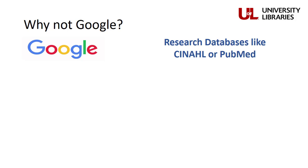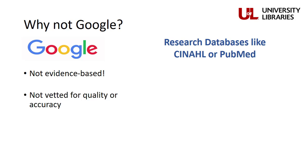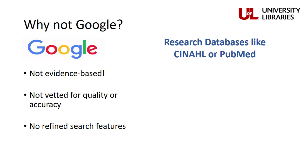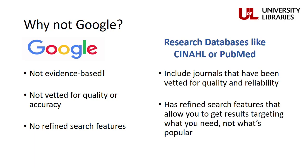You may be asking yourself, why bother with databases at all? Why not just search Google? Google is not an evidence-based resource. Nothing in Google has been vetted for quality or accuracy. A completely fake paper formatted to look professional would still show up on Google, because anything can be posted on the internet without requiring it to be factual. Google also has no refined search features, and results are returned based on popularity as much as relevancy. In research databases like CINAHL and PubMed, however, all journals have been vetted for accuracy and reliability, and they have refined search features that allow you to build searches returning articles on topics you want instead of what's most popular.